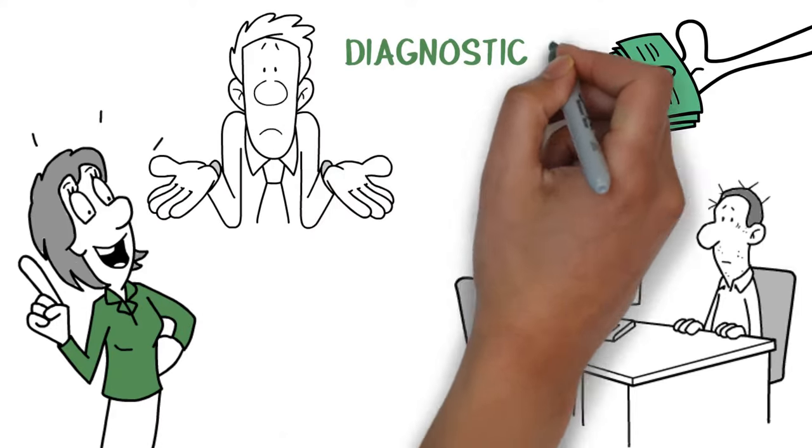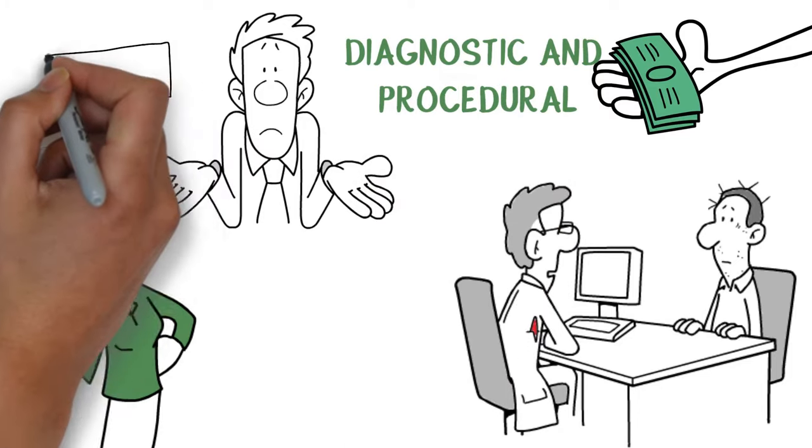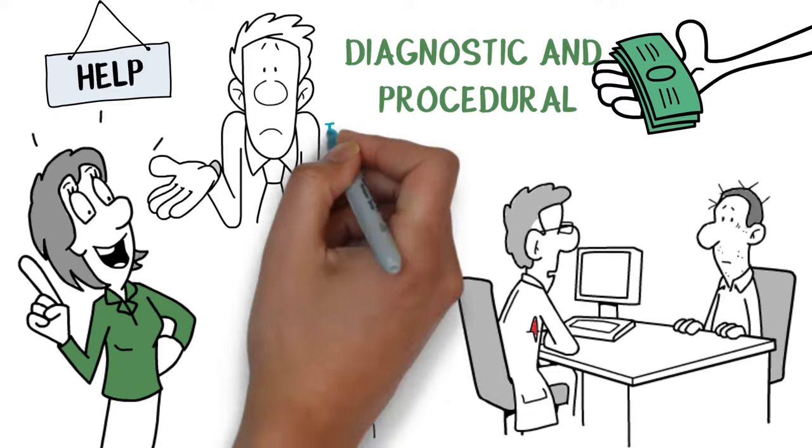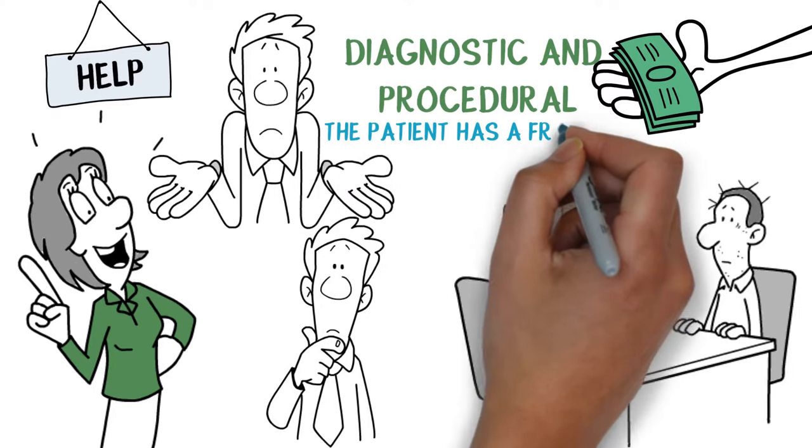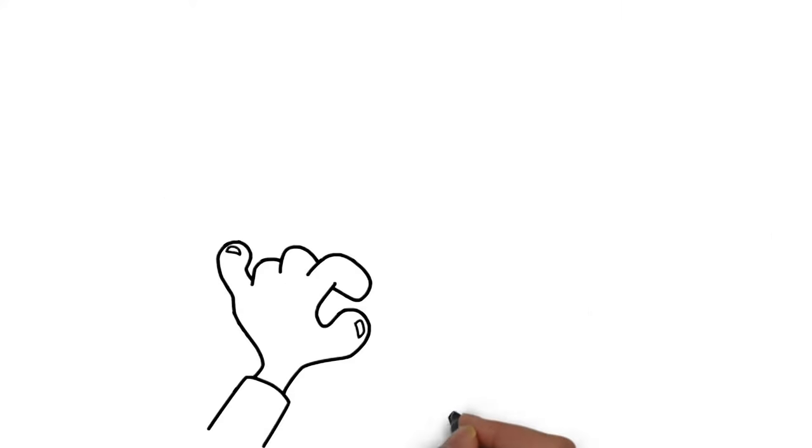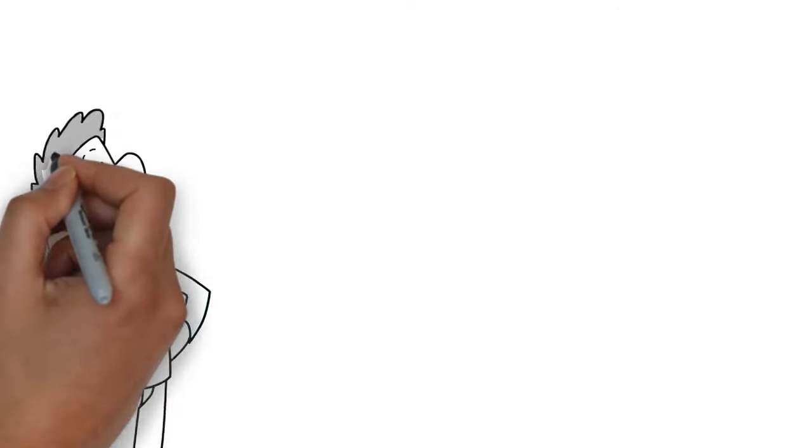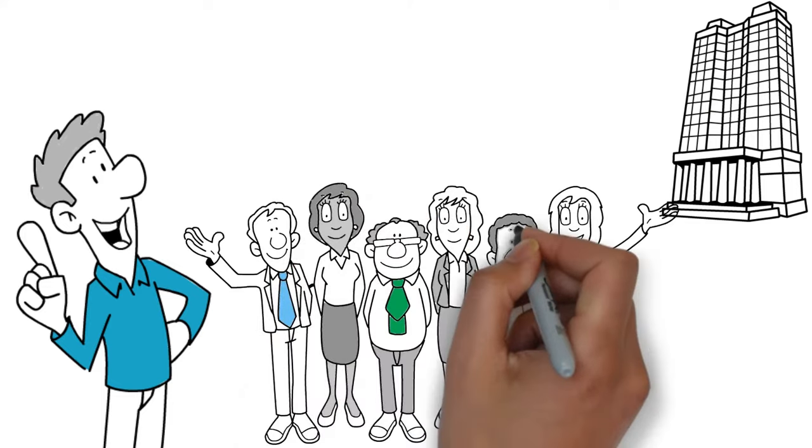By what are called diagnostic and procedural codes. First, your complaint—help, I think my leg is broken—it's put into medical language. The patient has a fracture. And then a medical coder translates that medical language into numbers, a standardized coded language that insurance companies, healthcare facilities, and government agencies all understand.